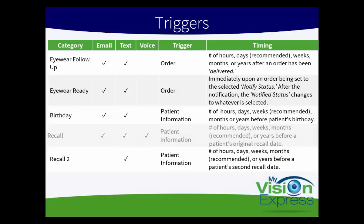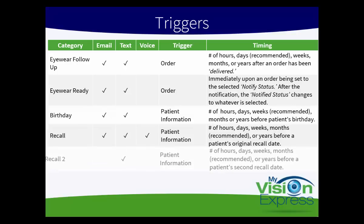For the recall message type, it can be sent via email, text, or voice. It is based on patient information and can be sent months before a patient's original recall date. We recommend a few months before so that your patient has time to contact you and set up their next eye appointment. For recall two, it can be sent via text and is also based on patient information — your patient information has two recall dates, so this is for the second one. This can be set for any number of hours, days, weeks, or months before a patient's second recall date. And that covers all of the different message types, how they can be sent, what triggers them, and their timing.